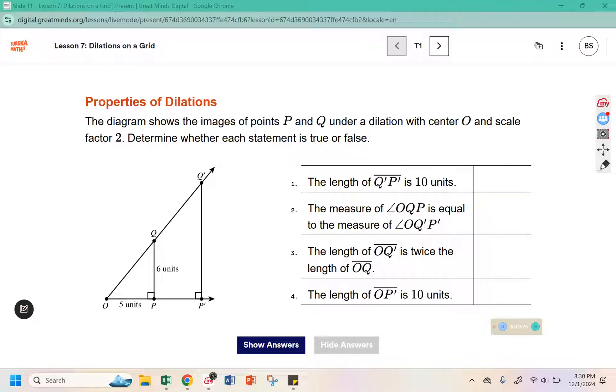The measurement of angle OQP, OQP is this one here, is equal to OQ prime P prime. Is that true or false?